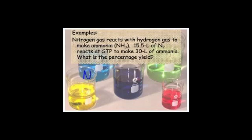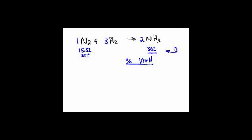Nitrogen, N2. When you balance this one, this will be a 2, this will be a 3, and this is a 1. We have 15.5 liters of N2 reacts at STP to make 30 liters of ammonia. What is the percentage yield? It says it made 30 liters of ammonia. If you did this in a laboratory or industrial setting, that's how much stuff you actually got out of the reactor.